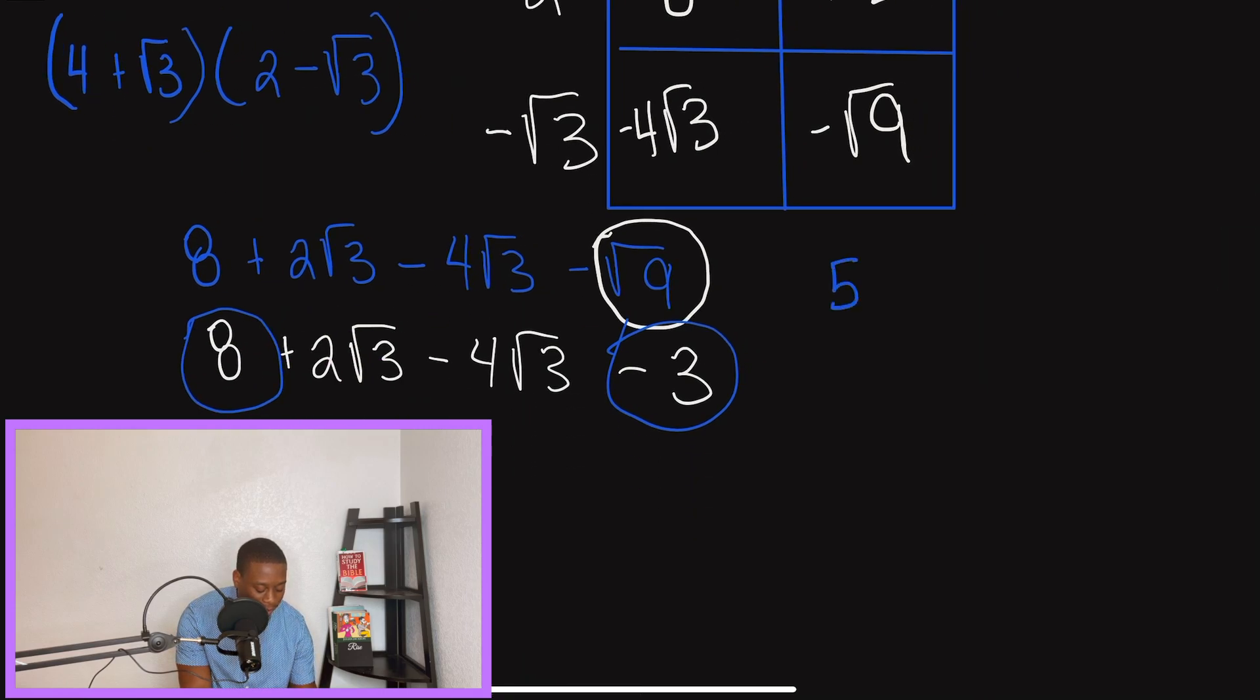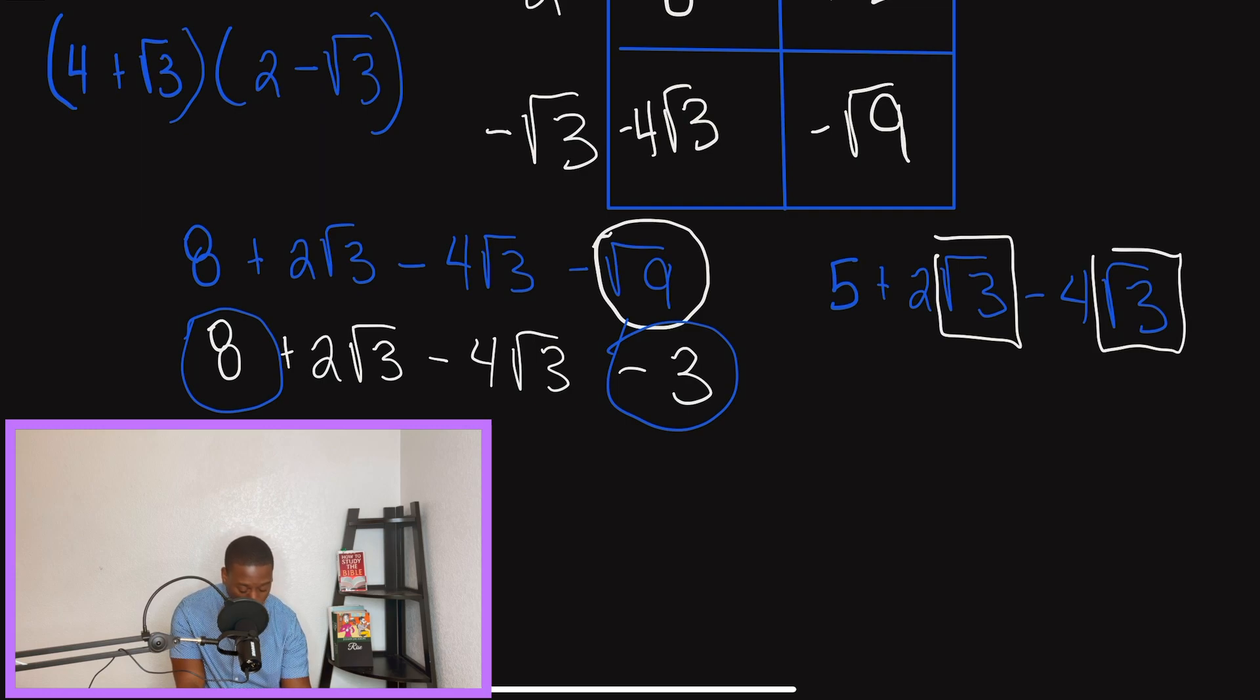So we're simplifying this more. And matter of fact, let's just slide out to the left some more. So we have 5 plus 2 radical 3 minus 4 radical 3. And if you guys remember, just a few moments ago, I said to you guys, hey, if we have the same number under the radical, we are able to combine, meaning add or subtract. So how exactly do we do that? So in this problem, when you have the same number under the radical, what we do is we focus on the number in front of the radical and we just add and subtract.